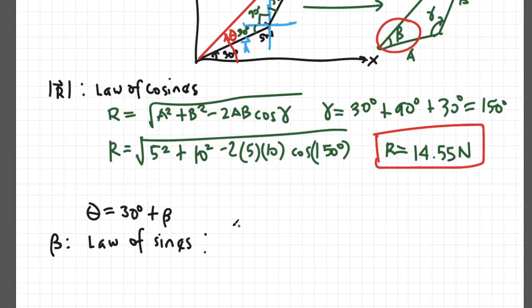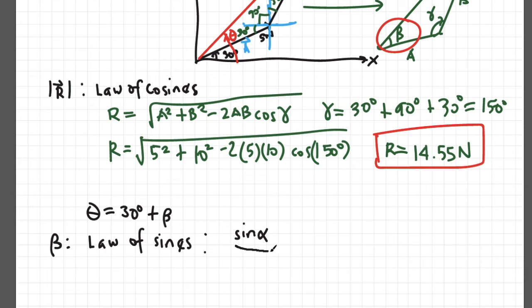Based on this figure, sin alpha divided by the opposite length of that angle is equal to sin beta divided by B equals sin gamma divided by C.